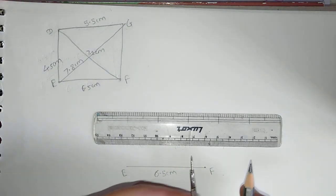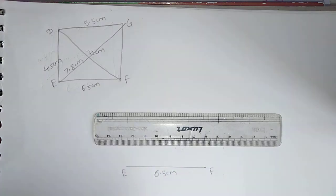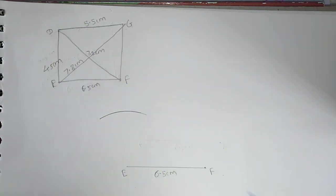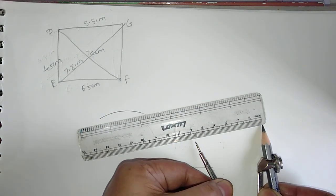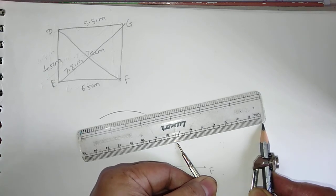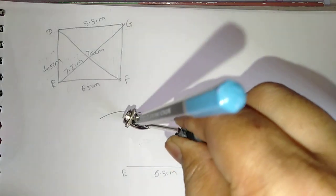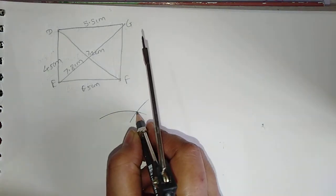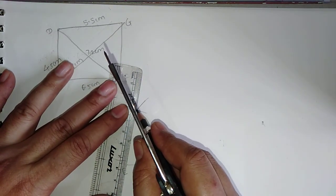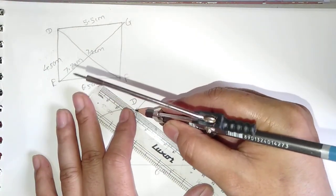Take the 4.5 cm distance — yes, it is exactly 4.5 cm. Draw the arc from point E; put the needle on point E. Now measure the distance 7.2 cm with the help of the scale in the compass. Put the needle on F. We get the intersection point — this is point D. Join point D to point E and point F with the help of the scale.